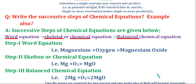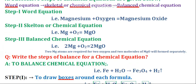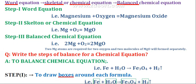In the successive steps of chemical equations, there are three types: the word equation, the skeletal or chemical equation, and the balanced chemical equation. For example, magnesium plus oxygen giving magnesium oxide is a word equation. Mg plus O2 equals MgO is a skeletal equation. 2Mg plus O2 equals 2MgO is the balanced equation.